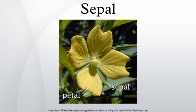Examples of plants in which the term tepal is appropriate include genera such as Aloe and Tulipa. In contrast, genera such as Rosa and Phaseolus have well distinguished sepals and petals.